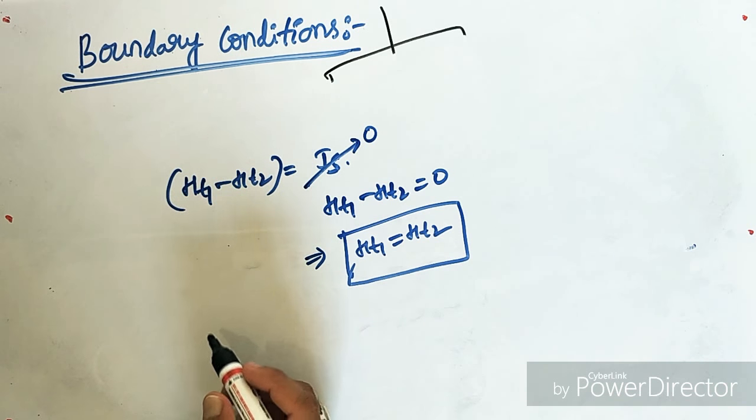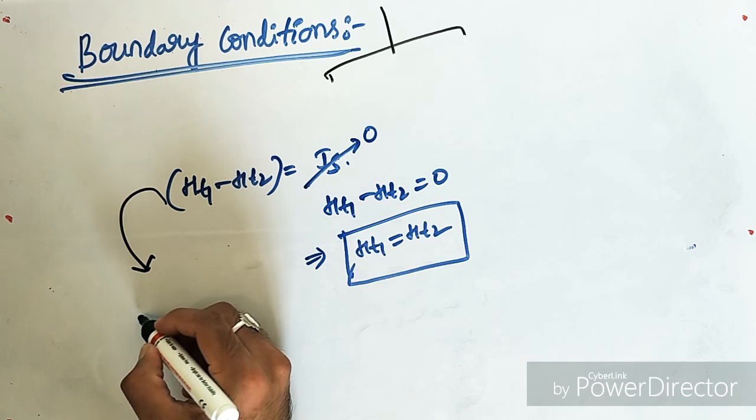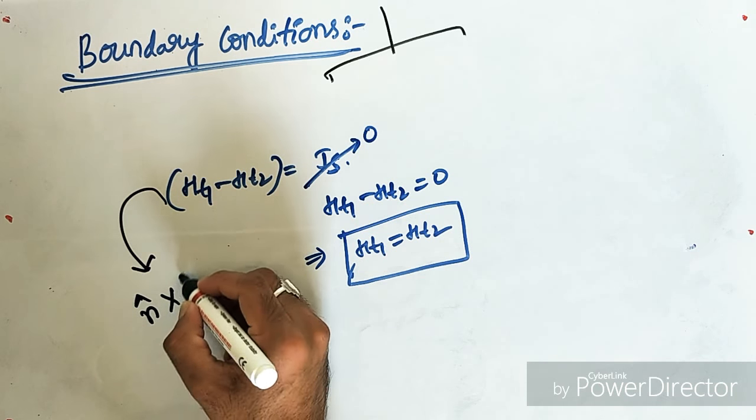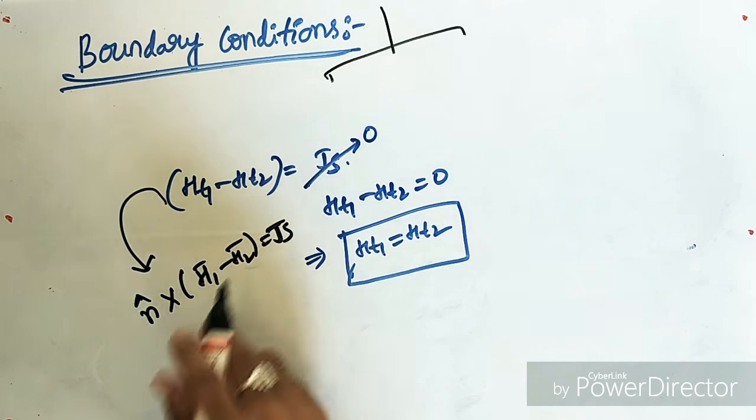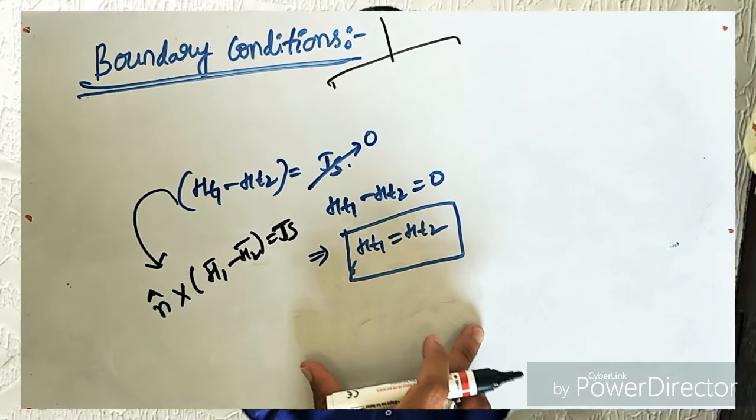And we can write the previous equation in other form as N cap into H1 bar minus Ht2 bar equal to Js. And that is it for this video and see you in the next one.